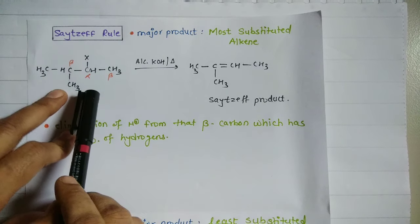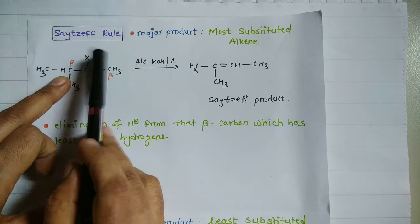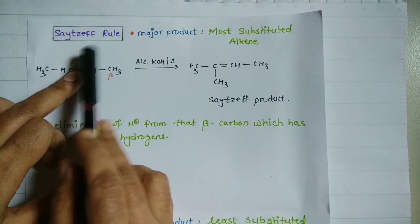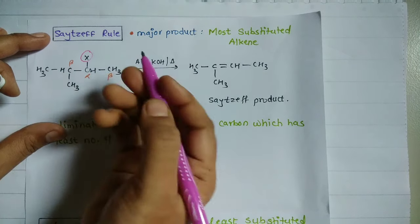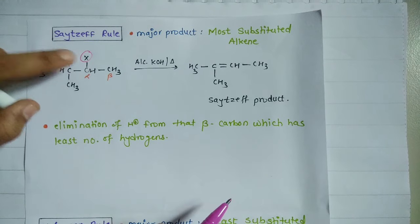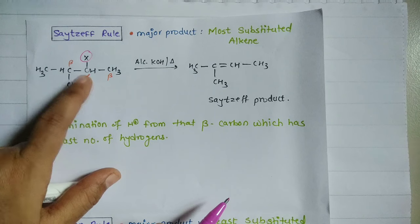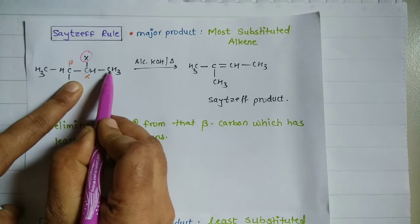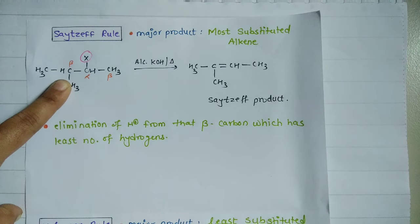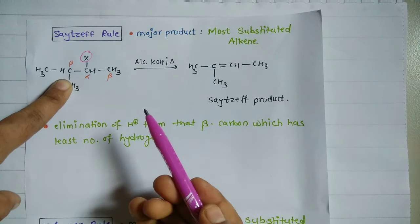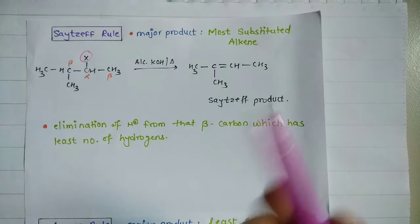Let's take some examples. Whenever we attach a halide group X — which can be chlorine, bromine, or anything — to any carbon, that carbon is called the alpha carbon. After alpha, we have the beta carbon on one side and another beta carbon on the other side. For elimination, we need to break the C–X bond as well as the C–H bond, and the HX group will be removed.